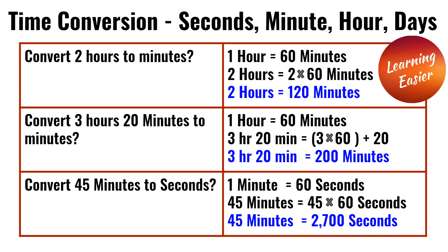Convert 45 minutes to seconds. We know one minute is equal to 60 seconds. So 45 times 60 is 2,700. So 45 minutes is 2,700 seconds.